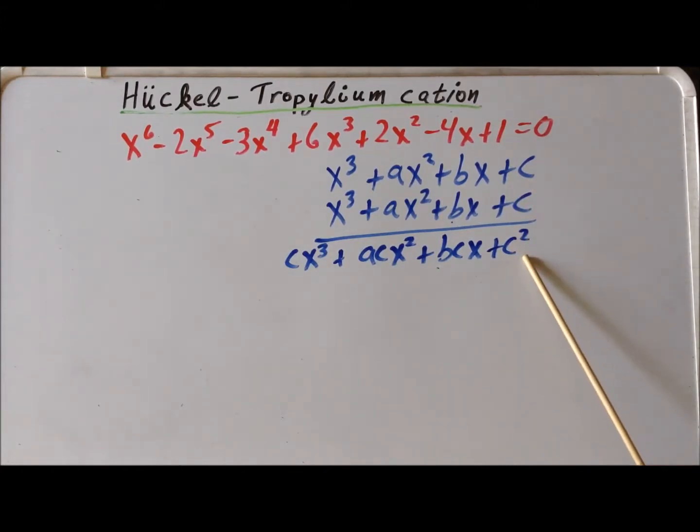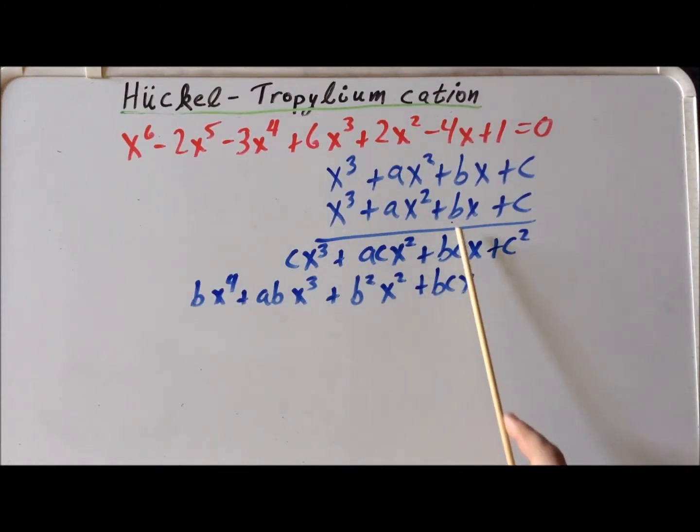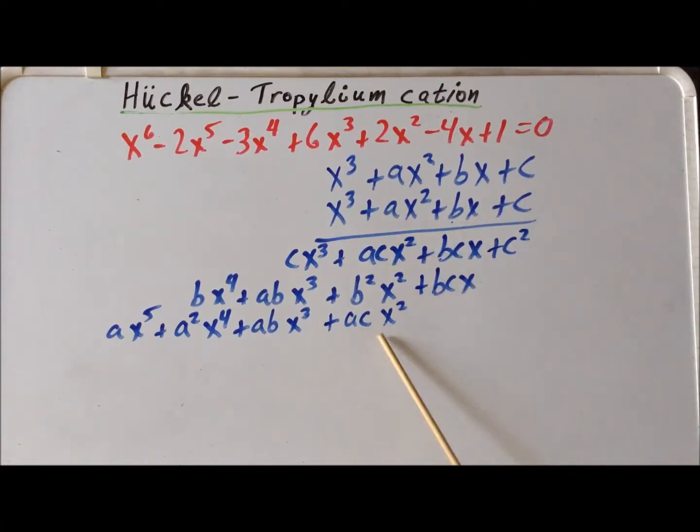C times c is c squared. C times bx is bcx. C times ax squared is acx squared. C times x cubed is cx cubed. Now multiplying by bx, bx times c is bcx. Bx times bx is b squared x squared. Bx times ax squared is abx cubed. Bx times x cubed is bx to the fourth. Now multiplying by ax squared, ax squared times c is acx squared. Ax squared times bx is abx cubed. Ax squared times ax squared is a squared x to the fourth. And ax squared times x cubed is ax to the fifth.